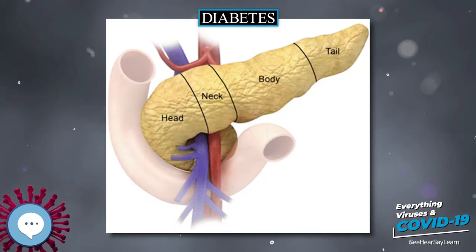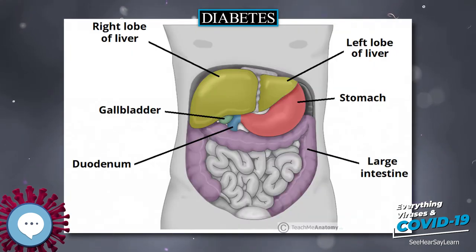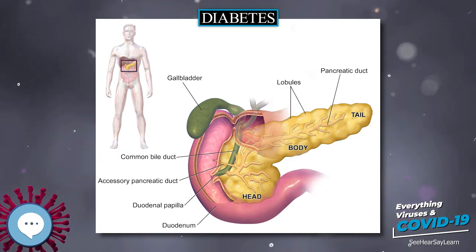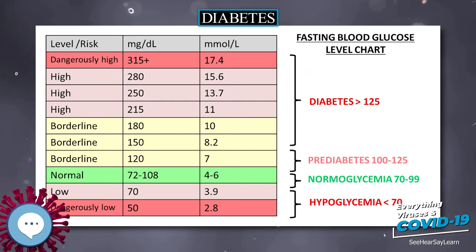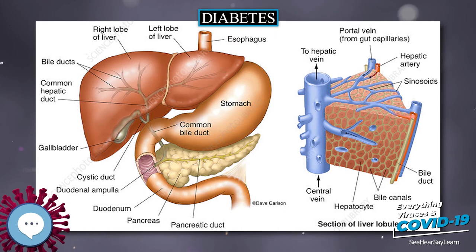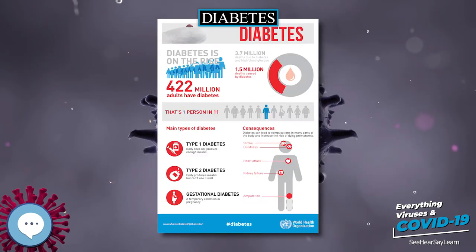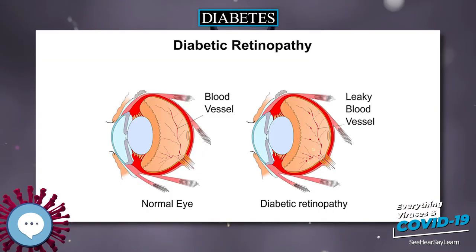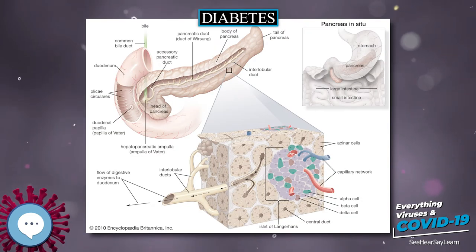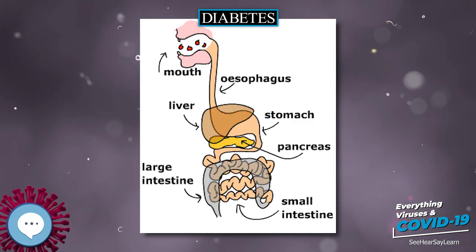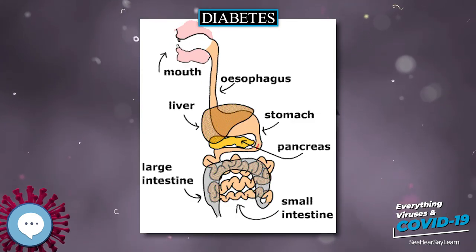Some cases of diabetes are caused by the body's tissue receptors not responding to insulin even when insulin levels are normal, which separates it from type 2 diabetes; this form is very uncommon. Genetic mutations, autosomal or mitochondrial, can lead to defects in beta cell function. Abnormal insulin action may also have been genetically determined in some cases. Any disease that causes extensive damage to the pancreas may lead to diabetes, for example chronic pancreatitis and cystic fibrosis. Diseases associated with excessive secretion of insulin-antagonistic hormones can cause diabetes. Many drugs impair insulin secretion and some toxins damage pancreatic beta cells, whereas others increase insulin resistance, especially glucocorticoids which can provoke steroid diabetes.